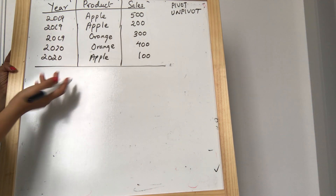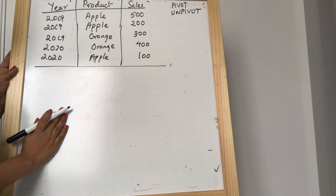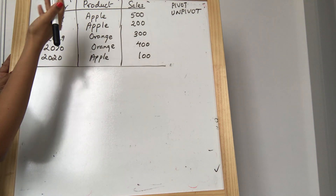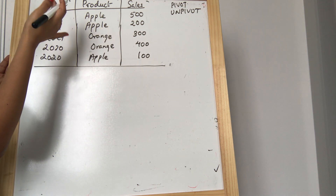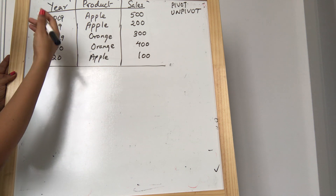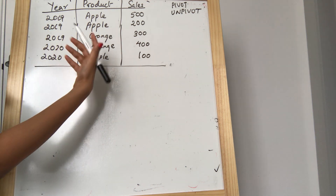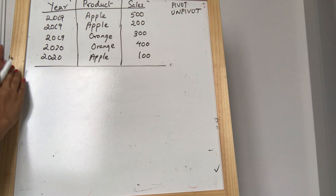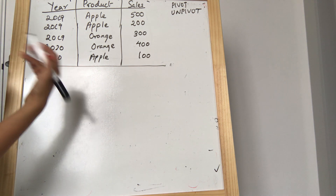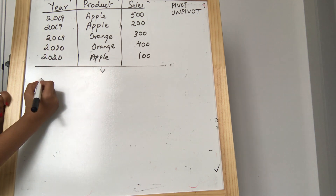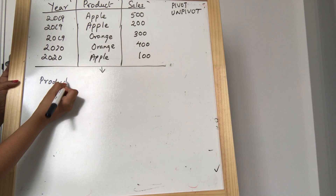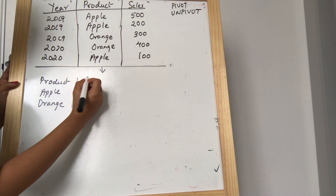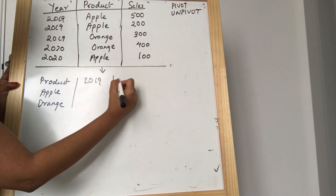Now I want to pivot this table. My requirement is I want to see the sales of apple for year 2019, and the sales of orange for year 2019, and the same for 2020. So I want to see the sales of my products for 2019 and 2020. I want my output to look like: product — that is apple and orange — and I want the sales columns for 2019 and 2020.